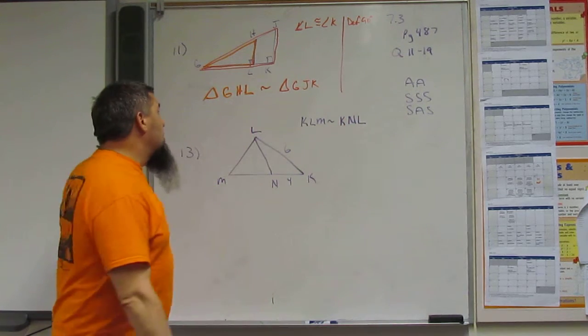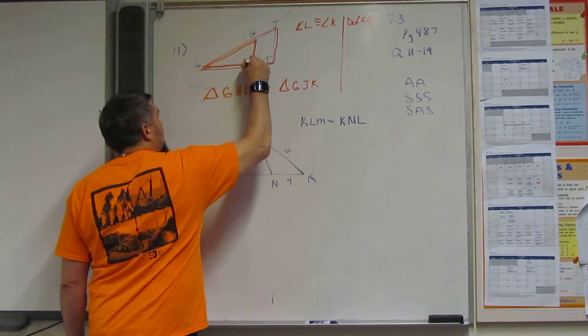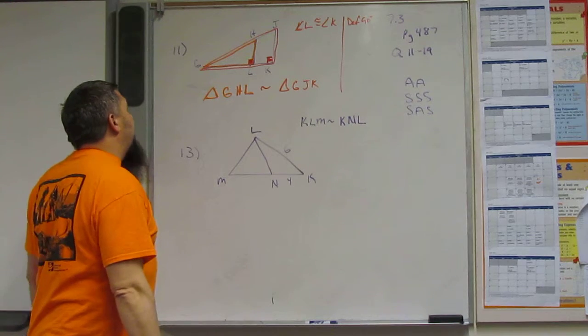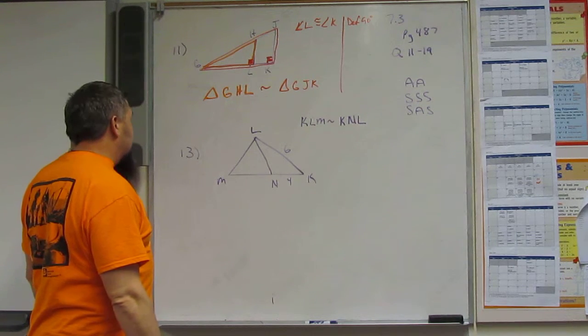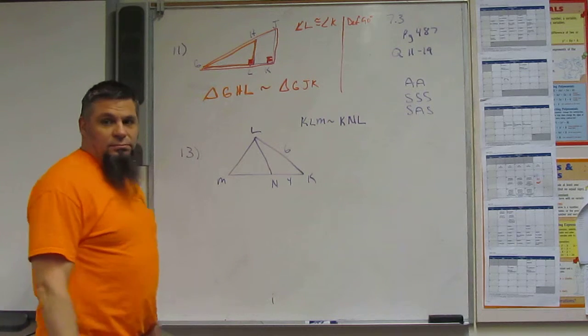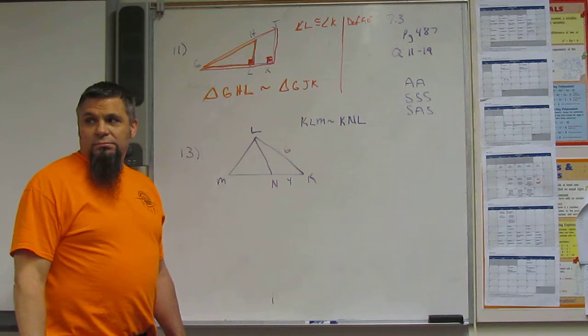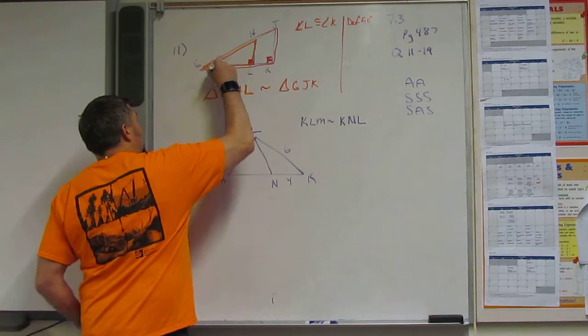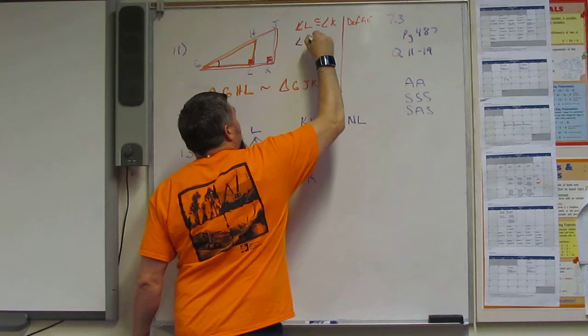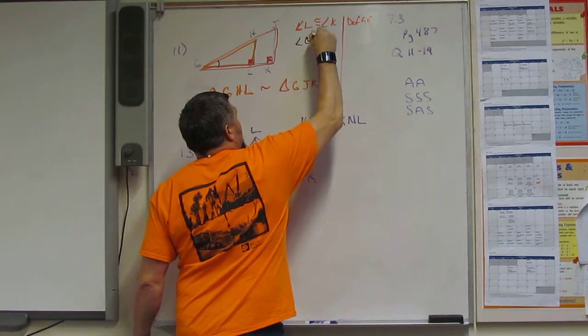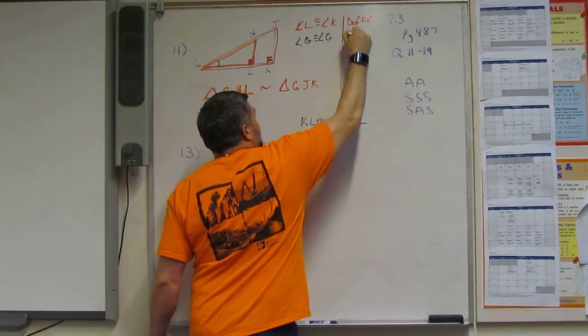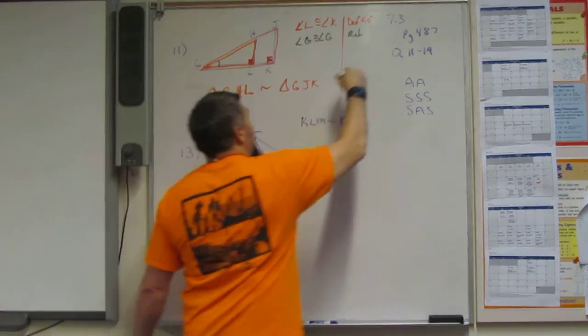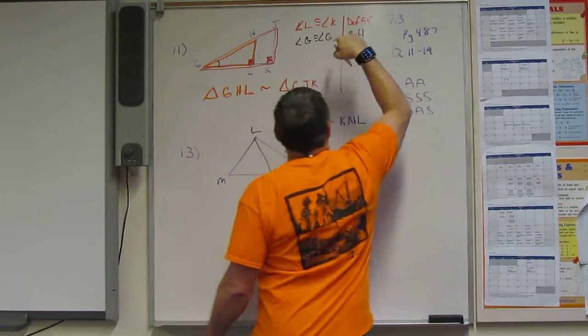So we know that these are congruent because these are 90 degrees. Do we know anything else? Well, we know one other very important thing. We know that angle G is congruent to angle G because of the reflexive property. Because it's the same angle, right? And so reflexive, or in this case you could actually call it identity.